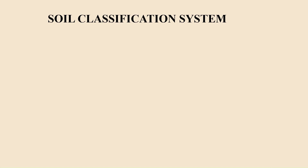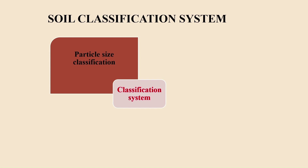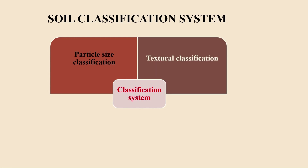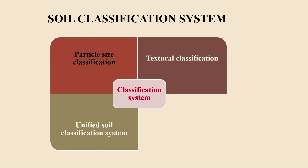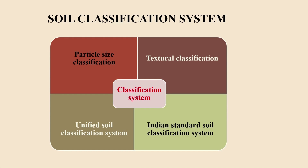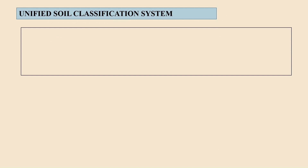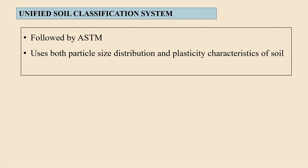In soil mechanics, we have broadly four different types of classification systems in practice: particle size classification, textural classification system, unified soil classification system, and the Indian Standard soil classification system. Now, let us learn the unified classification system. This classification system is followed by ASTM standards and it uses both particle size distribution and plasticity characteristics of soil for classification, and we have 15 groups of soil in the unified soil classification system.